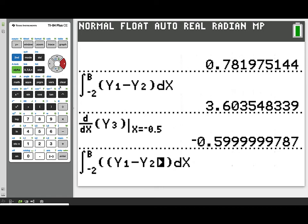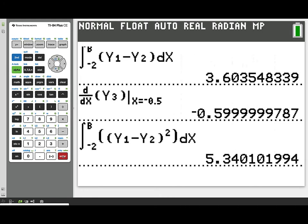That difference y1 minus y2 is the length of one side of that square. So for the volume of this solid, we'll want to integrate the cross-sectional area function, which would be that distance squared. So you can see I've amended the integral and recalculated. And this is giving us the volume of that solid.